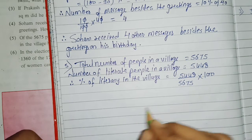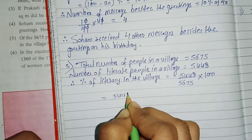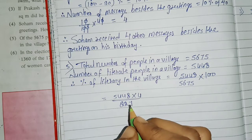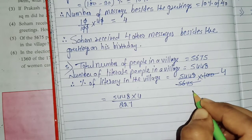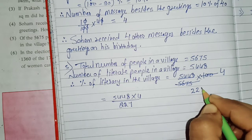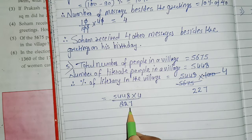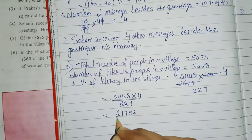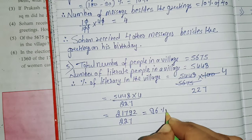Now we will simplify this fraction. After cancellation, this becomes 5,448 multiplied by 4 upon 227, which equals 21,792 upon 227, which comes to 96%.